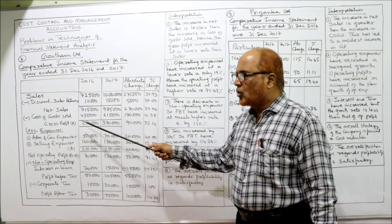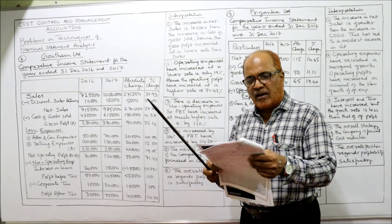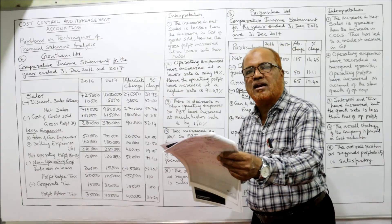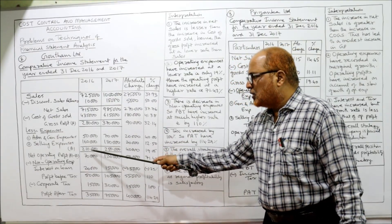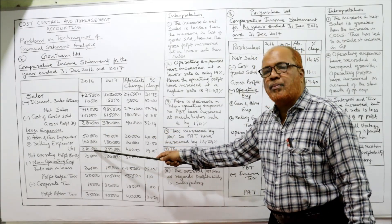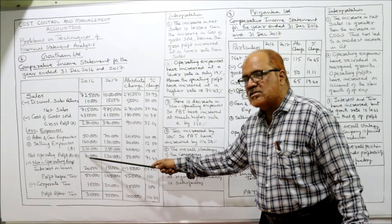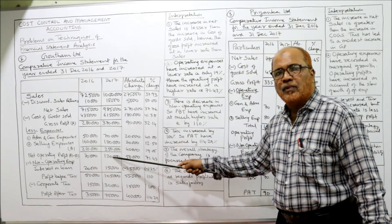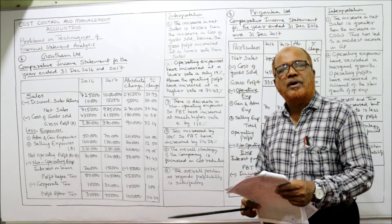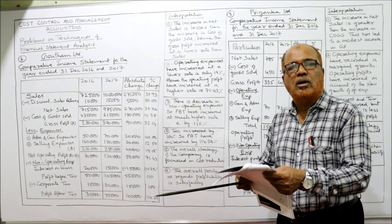Net sales minus cost of goods sold gives gross profit: last year 280, current year 370. Operating expenses — administrative expenses: last year 50, current year 70; selling expenses: last year 160, current year 180 — total operating expenses 210 and 250. Gross profit minus operating expenses gives operating profit: 280 minus 210 is 70, and 370 minus 250 is 120.